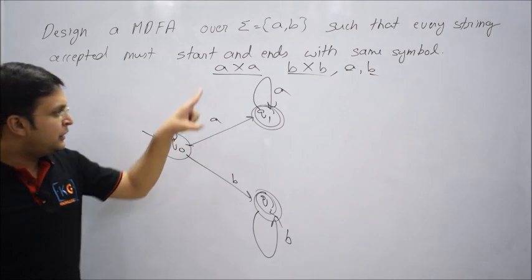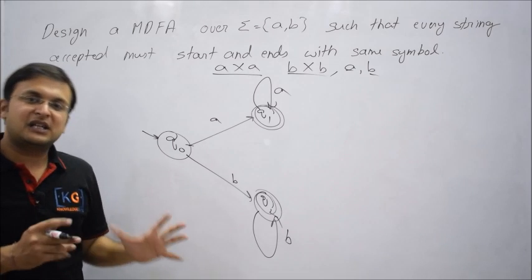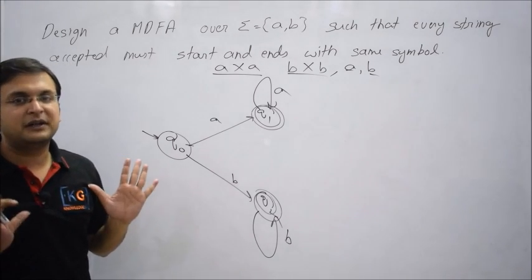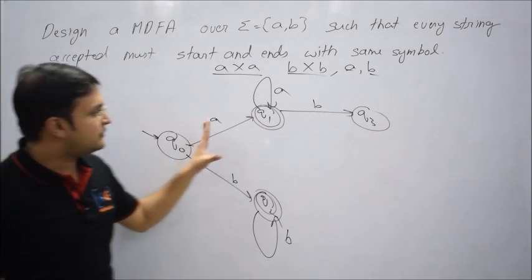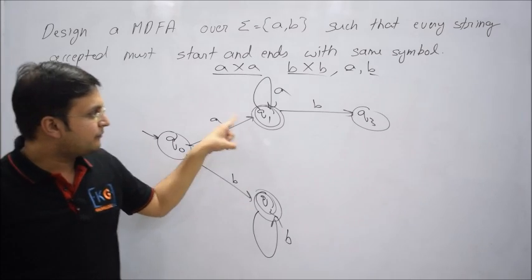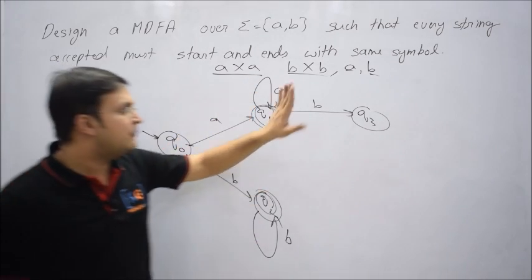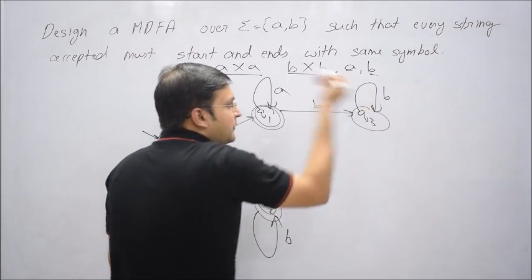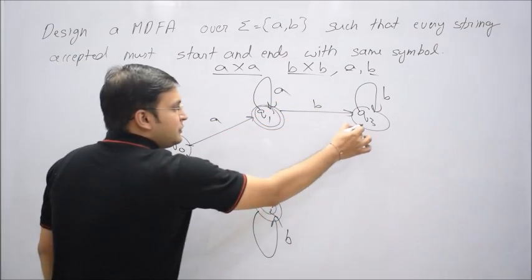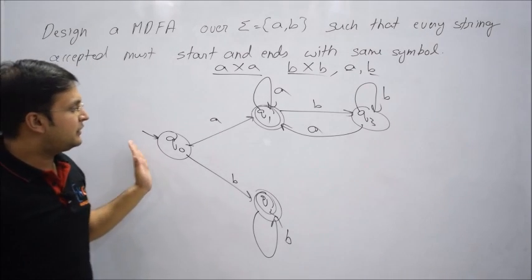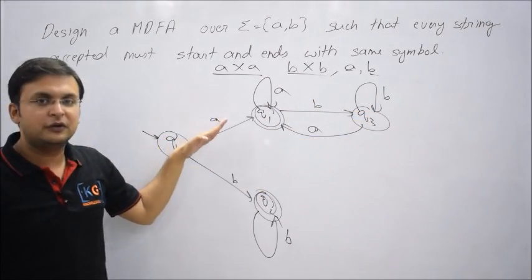If you are on Q1 (the A-side) and B comes, that is not acceptable as the final symbol yet — you must end with A. So let's create a temporary state Q3. From Q1, if B comes, go to Q3. You keep looping on Q3 for any number of B's, but as soon as A comes again, you return to Q1. You cannot reuse Q2 here because if you started with A, B mid-string is not the ending — you must come back to A.